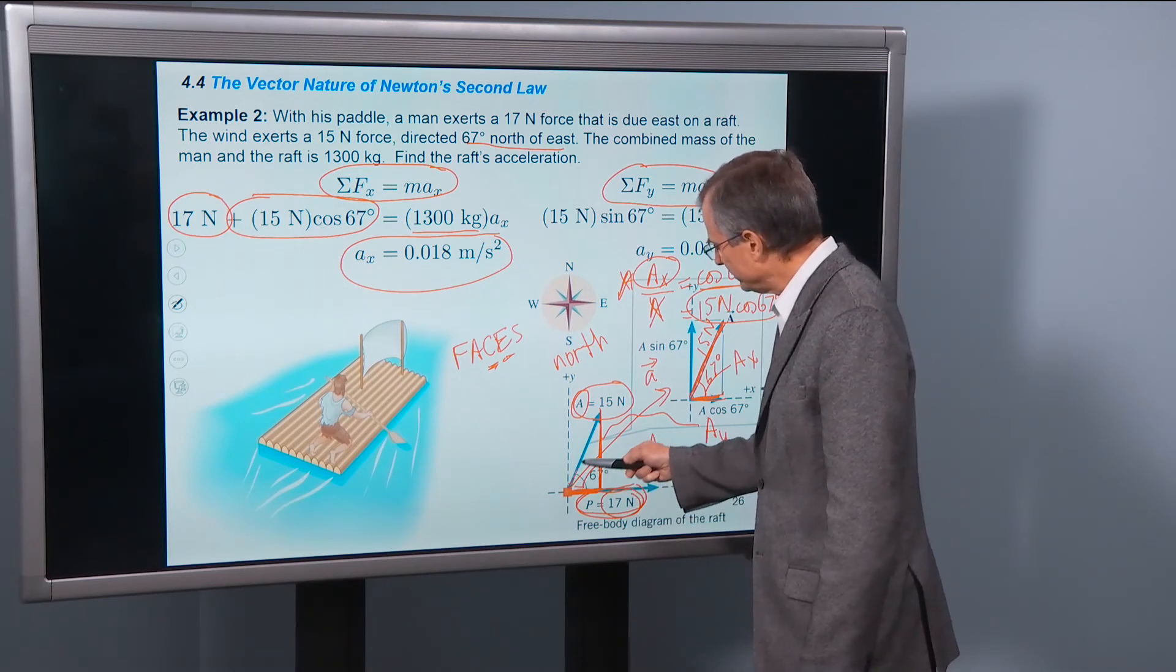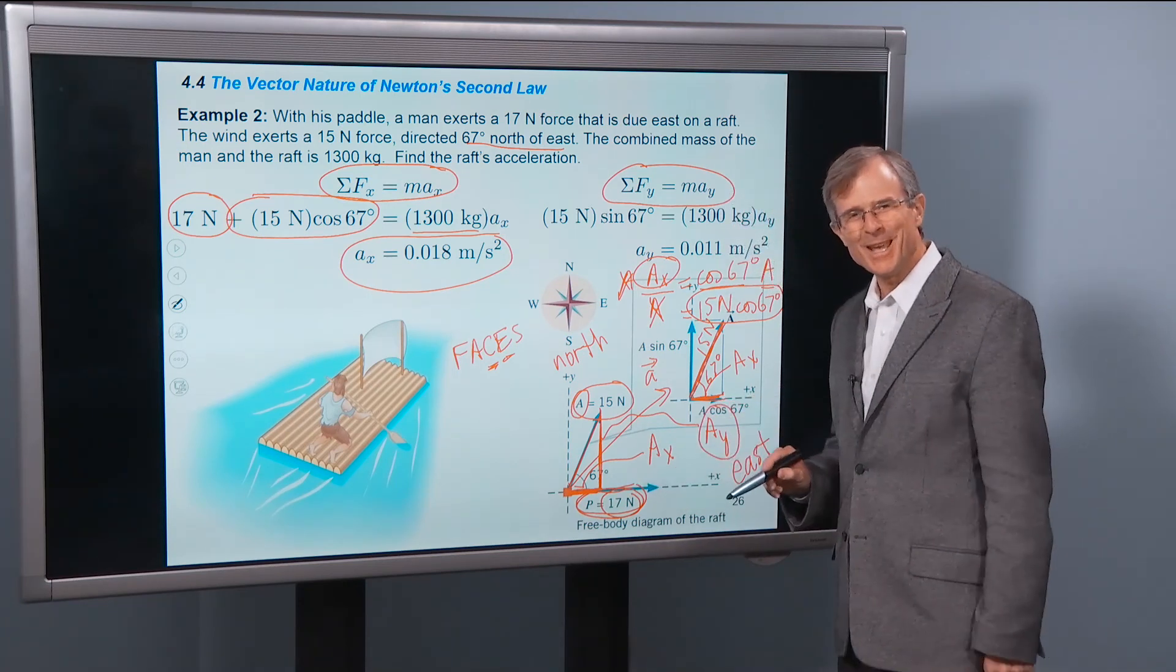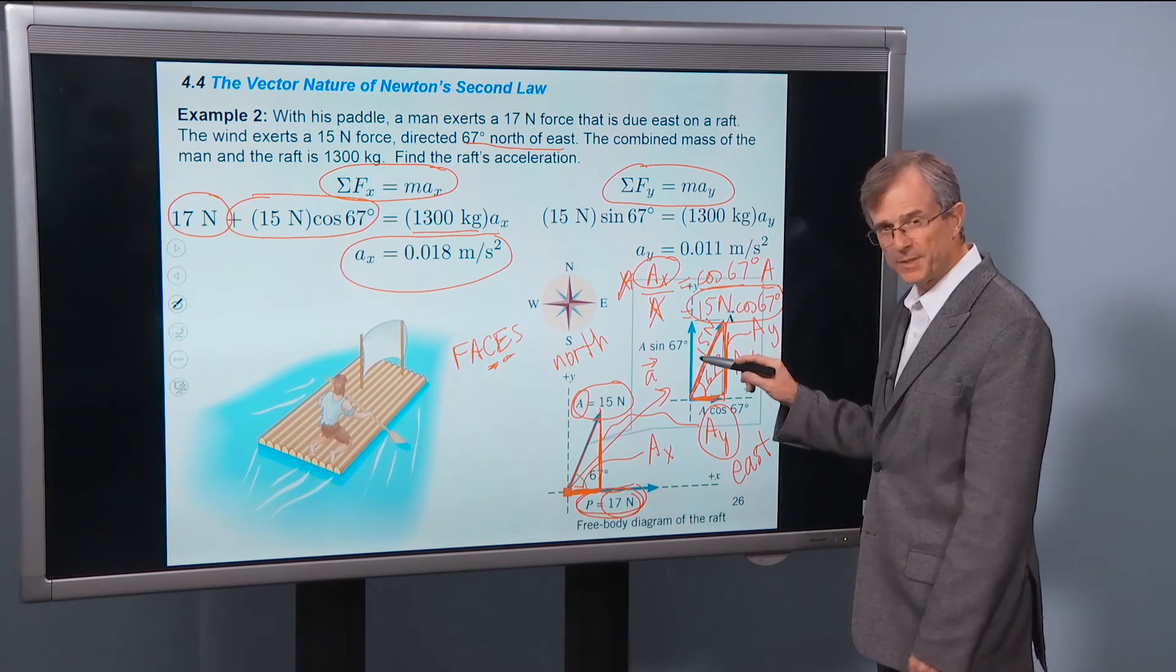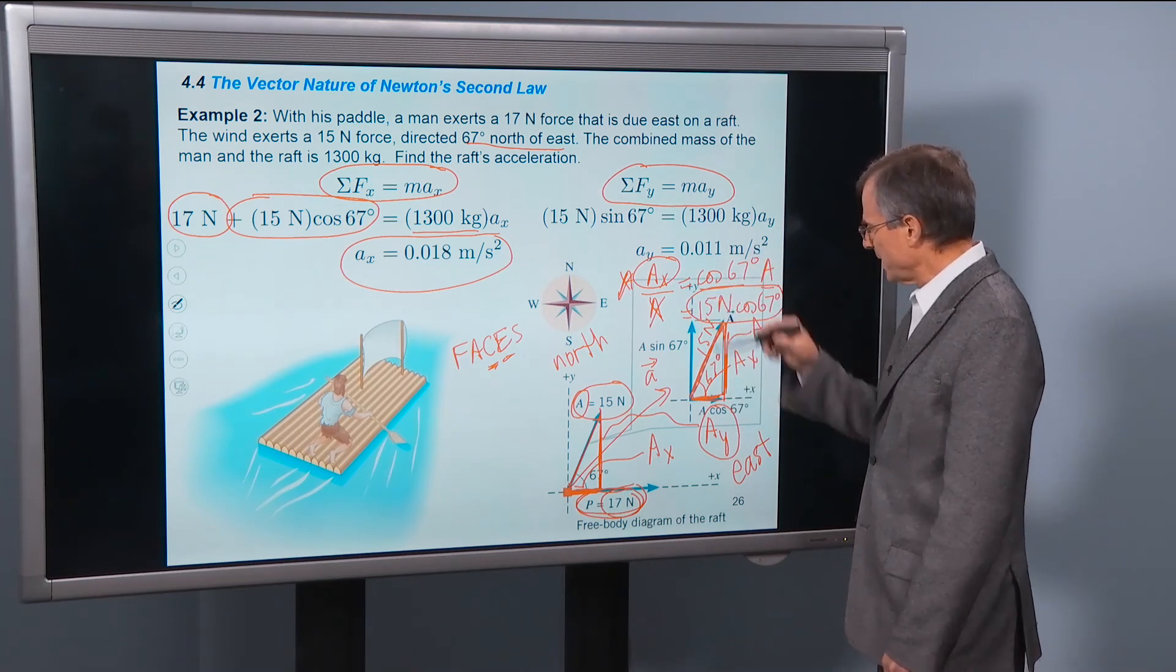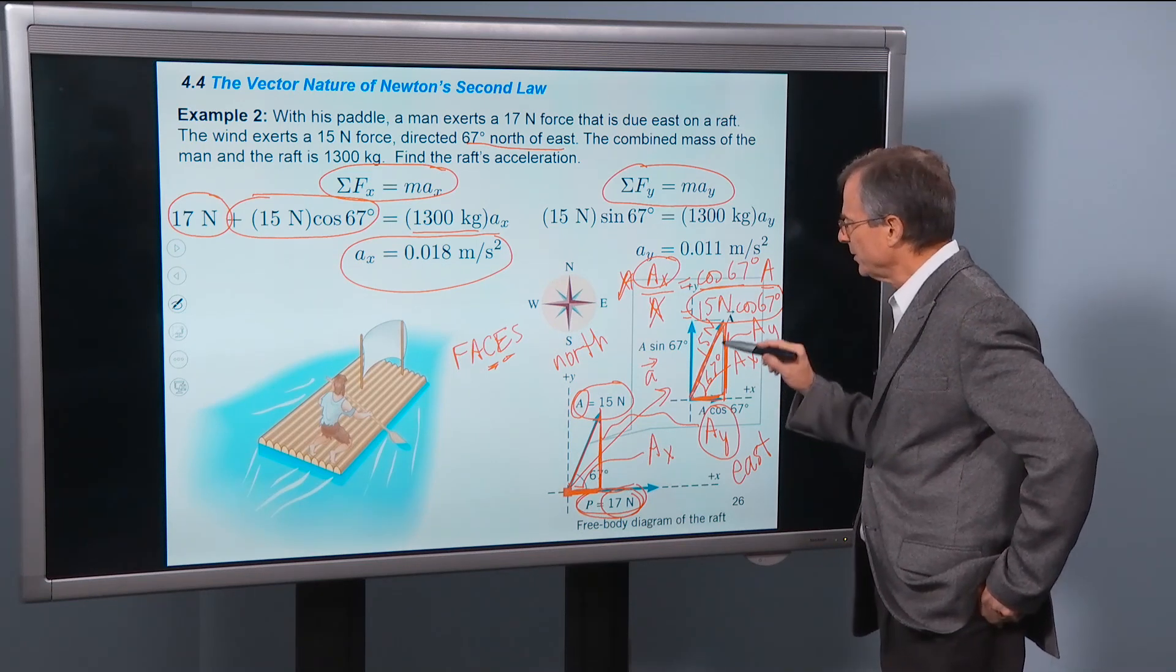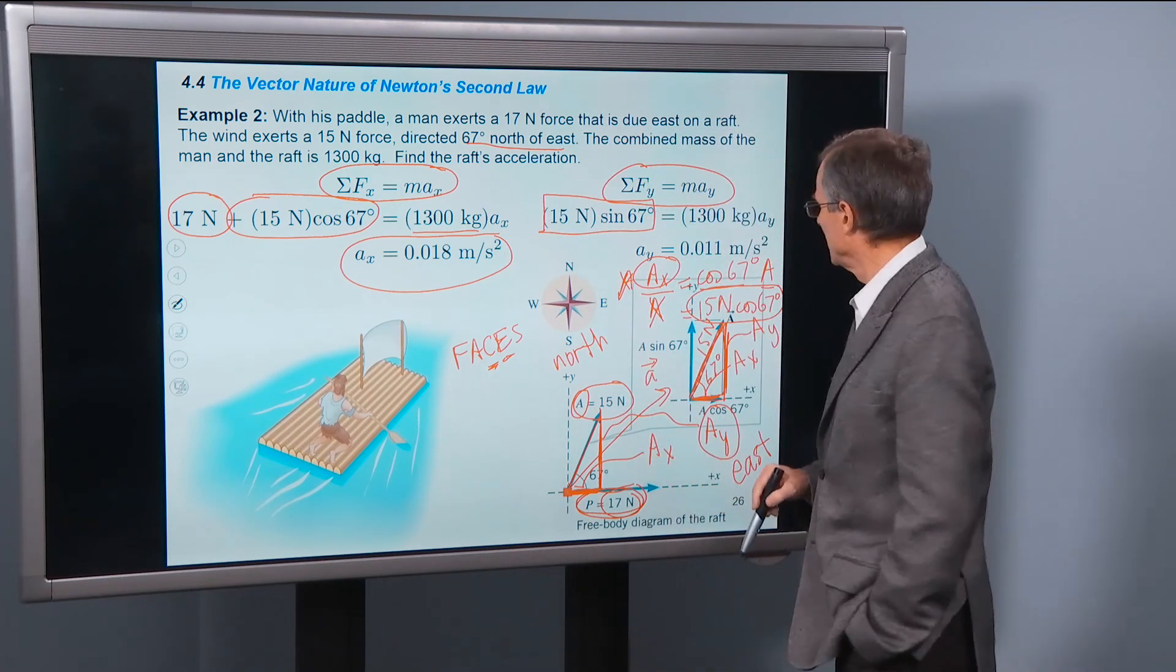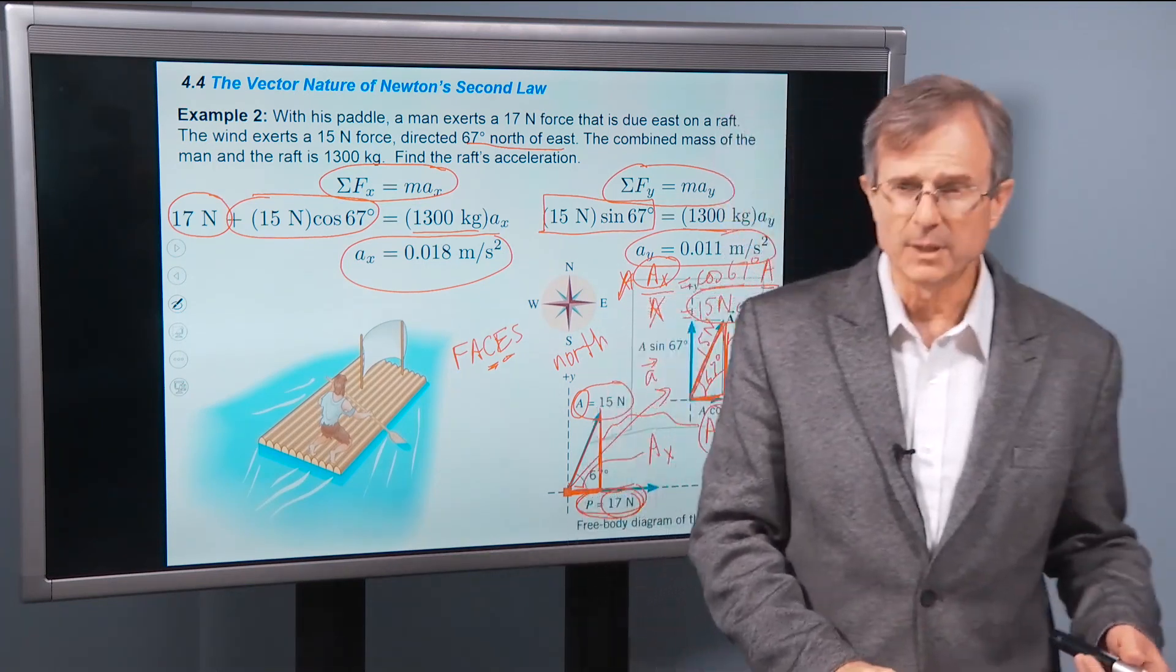What about this vector? Does it have a component in the y direction? Well yeah, we already said it does. There's the Ay right here. If we want to find Ay, it's this leg of the triangle. And Ay over 15 newtons is going to be the sine of 67 degrees. So that would be equivalent to this statement we have here. And we can save time by just saying that Ay equals 15 newtons times the sine of 67 degrees. That's all there is to it. And that's what this y component is here. So again, plugging in 1300 newtons, solving for the acceleration. That's how you do these force problems in two dimensions.